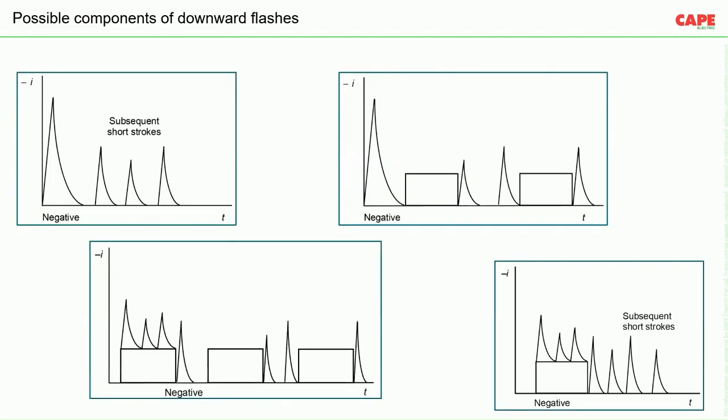Lightning impulse can come in various ways. Examples include: a long impulse followed by subsequent short impulses; a long-duration impulse; a long-duration impulse with superimposed short-duration subsequent impulses; or multiple long-duration impulses.